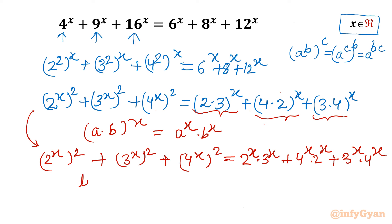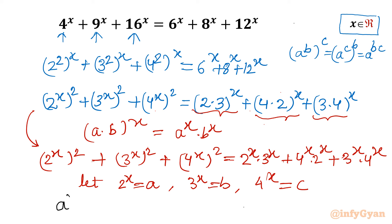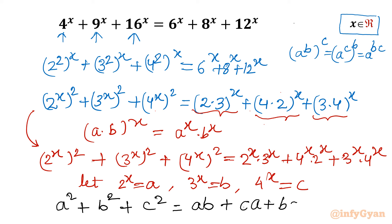Now let us use substitution. I will write 2^x = a, 3^x = b, and 4^x = c. Then our equation will convert into: a² + b² + c² = ab + bc + ca.